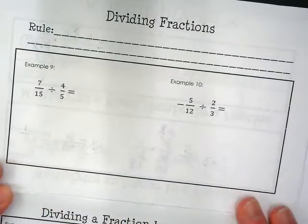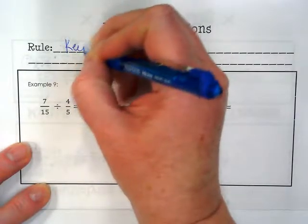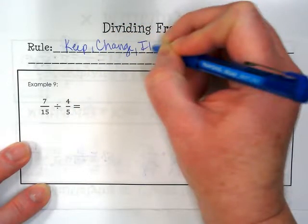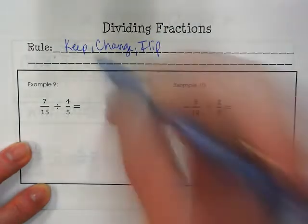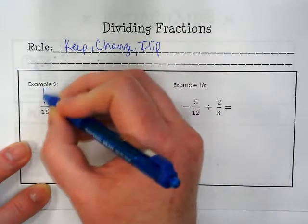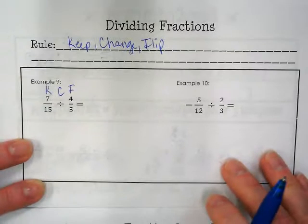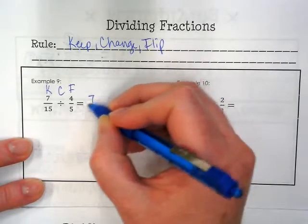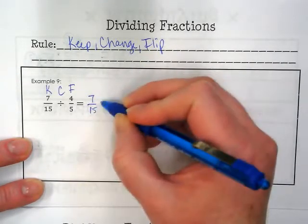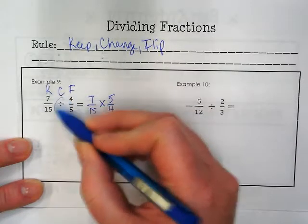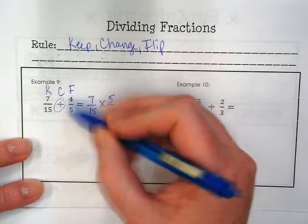Let's go into dividing. So the rule after we just saw our video is Keep, Change, Flip. We keep the first fraction, we change the symbol, and we flip the second fraction. So 7/15 is now going to be times 5 over 4. We change this to multiplication, and we flip this.